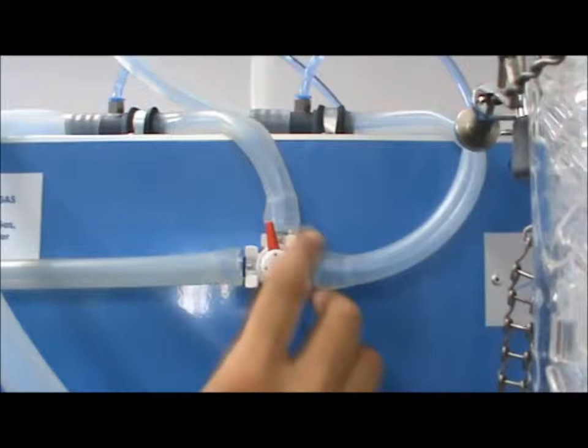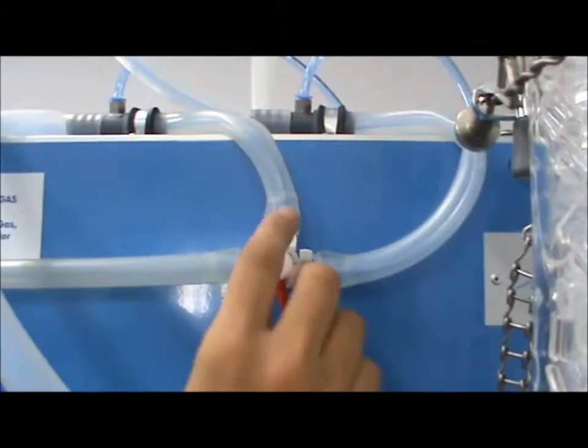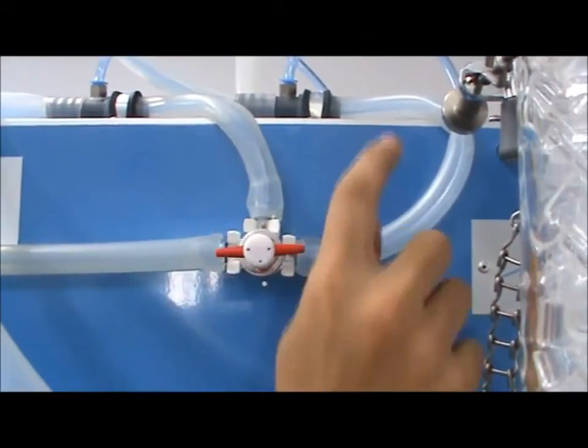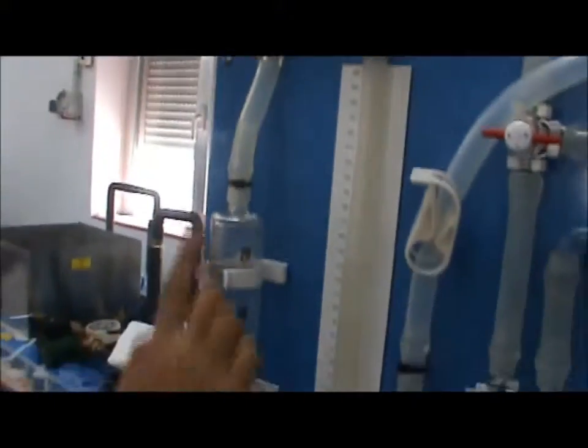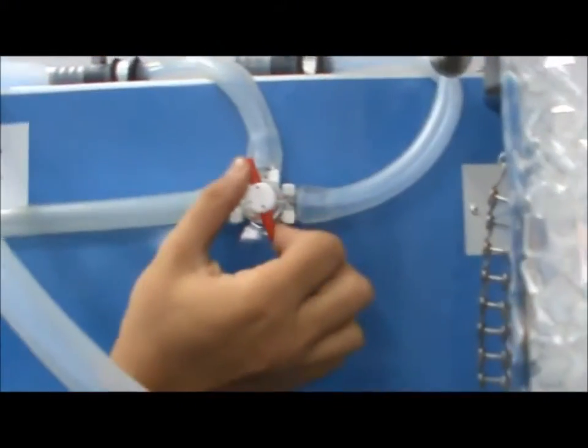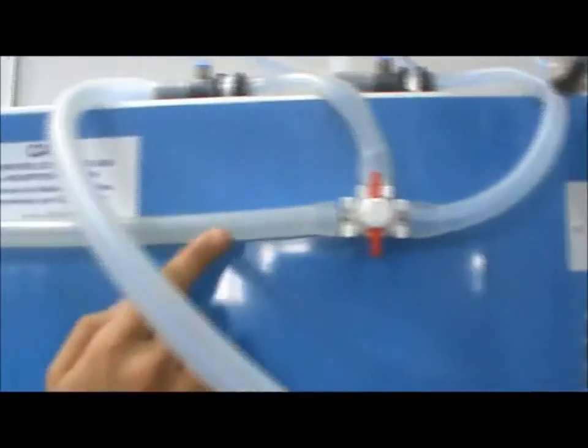Arranging valve VT1 determines where in the column samples are taken from. Positioning the valve like this, samples are taken from the upper part. In today's experiment, we will use this configuration, which takes samples from the middle of the column.